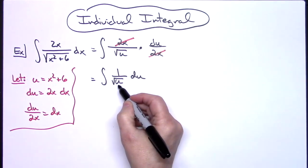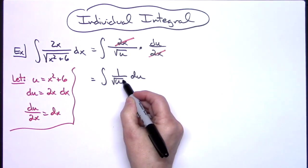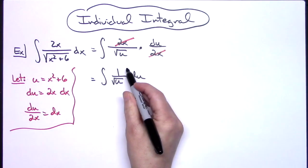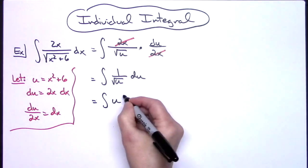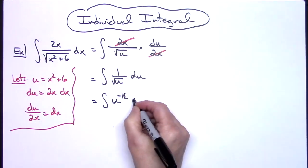Now I need this written in exponential form, so u to the 1 half. Then I'm going to use my laws of exponents to bring it to the top and make it negative 1 half. So I have the integral of u to the negative 1 half, du.